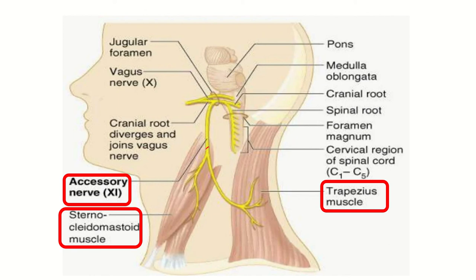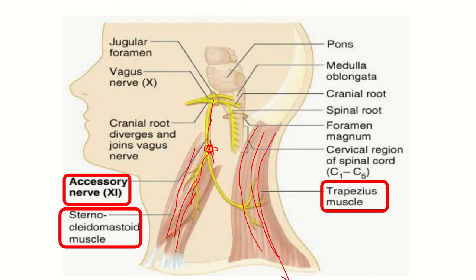This is the spinal accessory nerve — the 11th cranial nerve. It originates within the cranial cavity from the medulla, then descends through the jugular foramen and divides into two parts: one part supplies the sternocleidomastoid muscle and the second part supplies the trapezius muscle. Both sternocleidomastoid and trapezius may lose their function due to damage of the spinal accessory nerve, which is very close to the sternocleidomastoid during the lymph node biopsy.